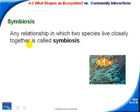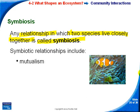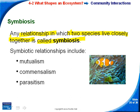Symbiosis is when two species live closely together. A clownfish living in a sea anemone is one example — the clownfish gets a benefit, but the sea anemone is neither helped nor harmed. This is actually an example of commensalism, not mutualism. Symbiotic relationships include mutualism, commensalism, and parasitism.